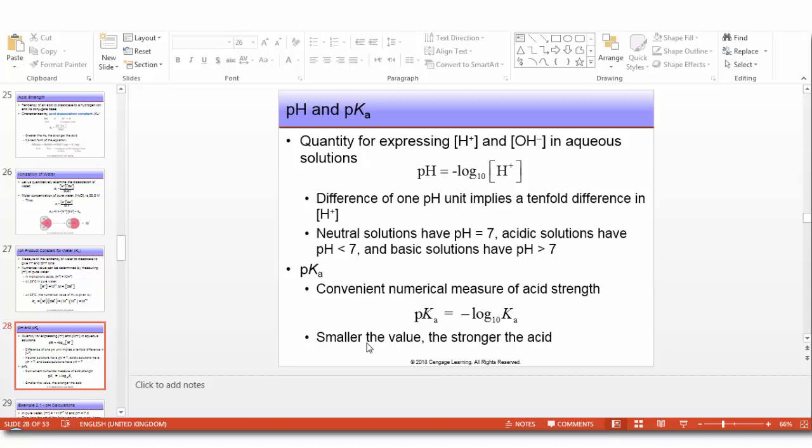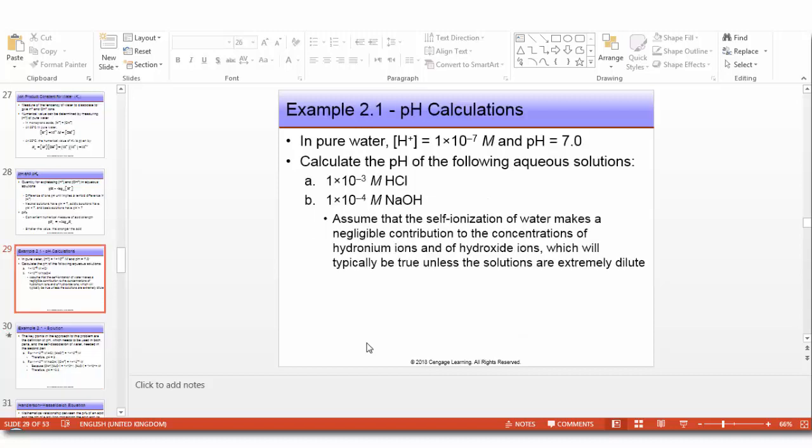A difference of one pH unit implies a tenfold difference in H+ concentration. Neutral solutions have pH equal to 7, acidic solutions have pH less than 7, and basic solutions have pH more than 7. In a similar way we can define pKa, which is convenient for measuring acid strength: pKa equals minus log to the base 10 of Ka. The smaller the value of pKa, the stronger the acid.